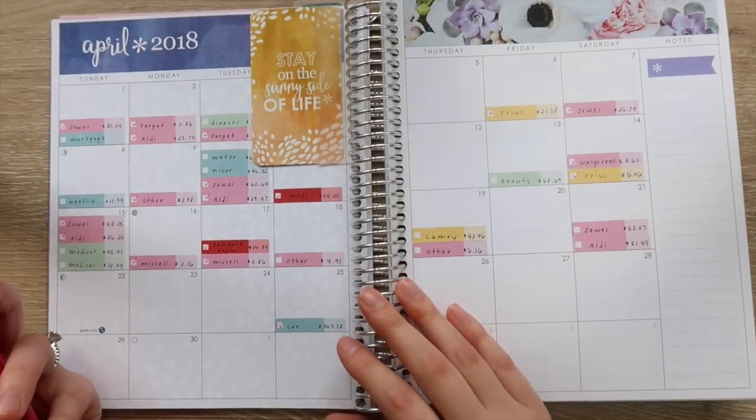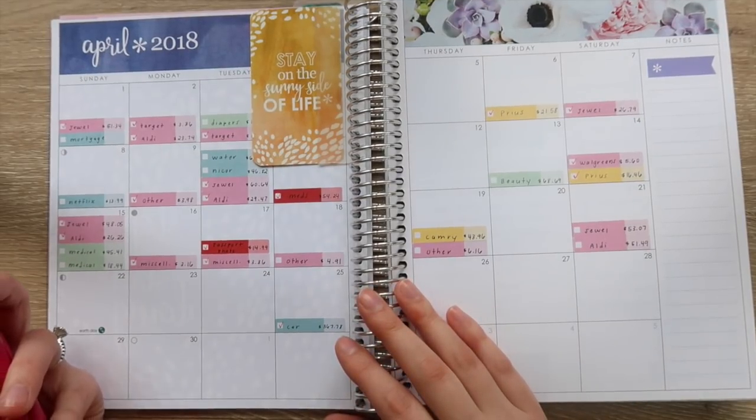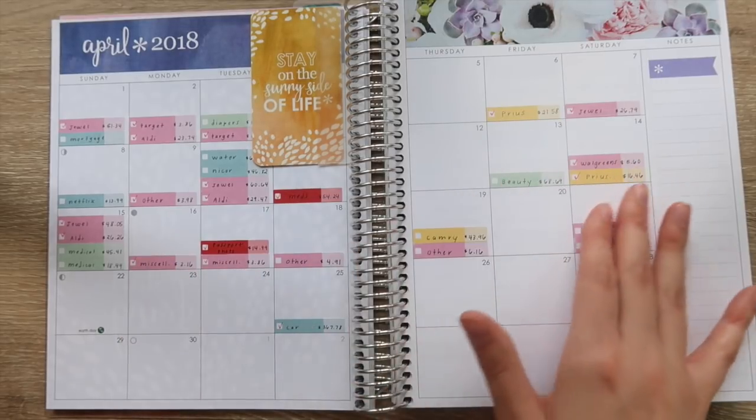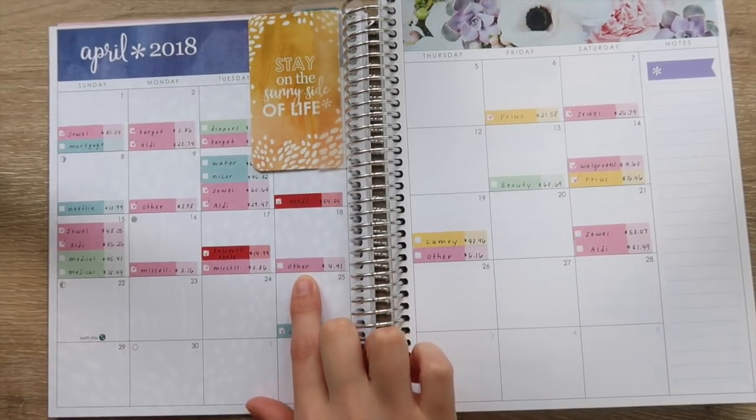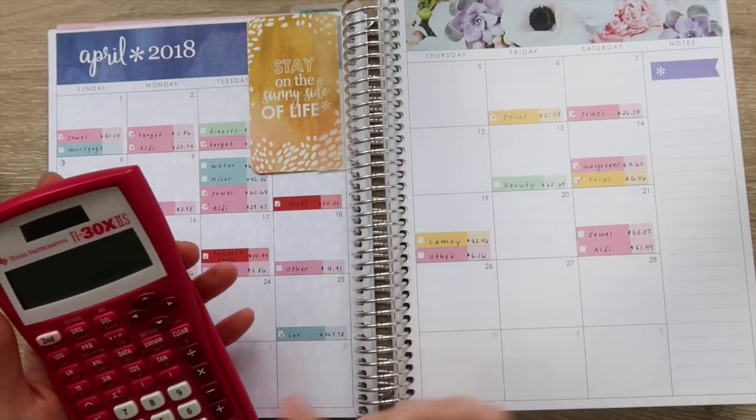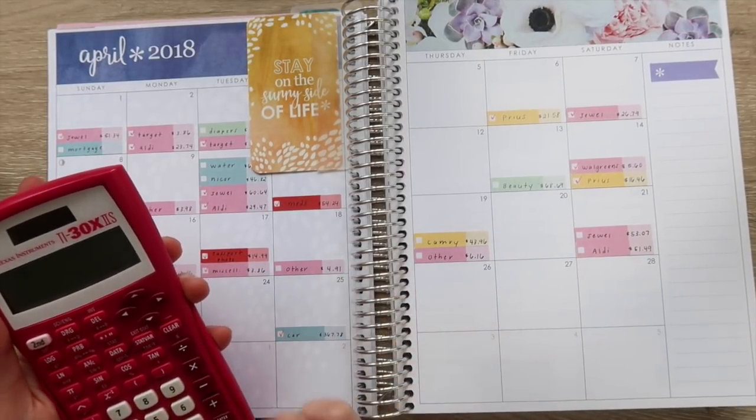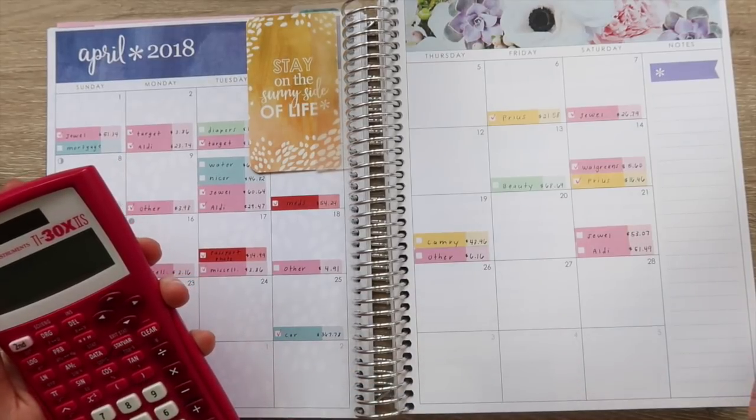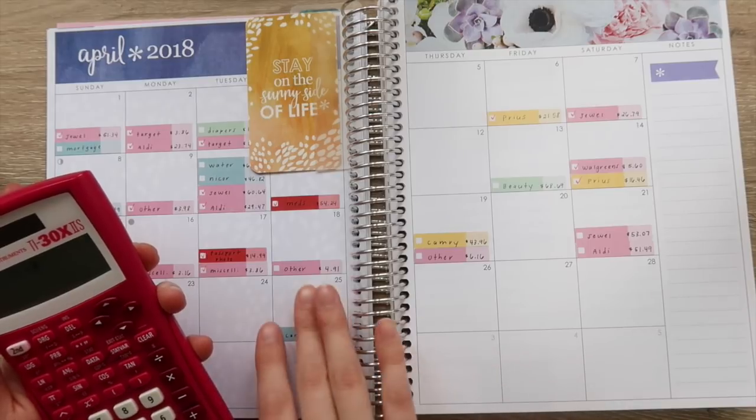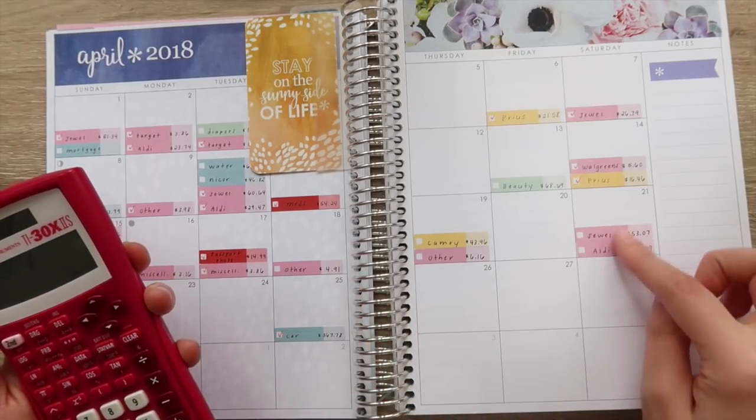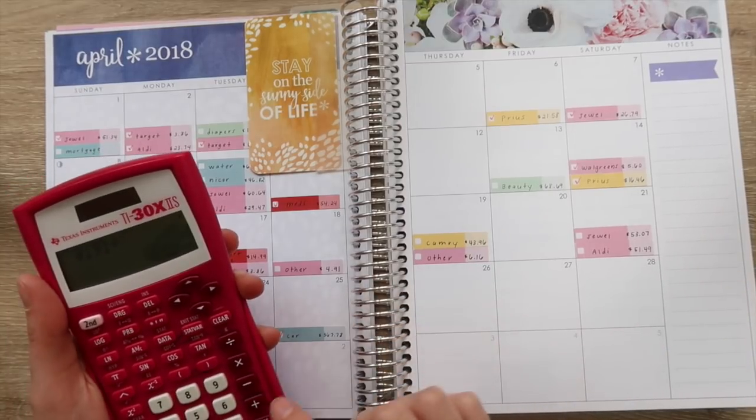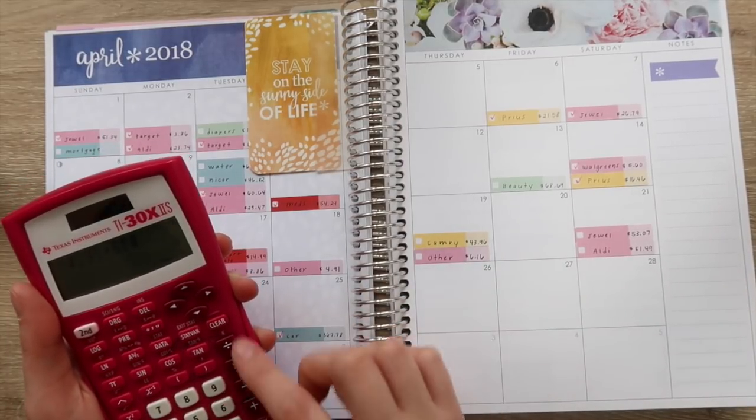It looks like the last time we did the check-in was earlier in the week of last week, so we have a few items to add. First is an other, that's sometimes we'll just run to Walgreens and grab milk or something like that. $4.91 and then $6.16.